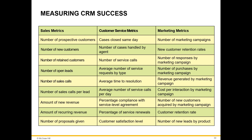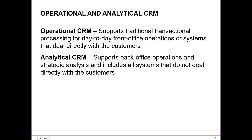This table lists a few common CRM metrics a manager can use to track the success of a customer relationship system. The two primary components of a CRM strategy are operational and analytical CRM. Operational CRM supports traditional transactional processing for day-to-day front office operations, or systems that deal directly with customers.